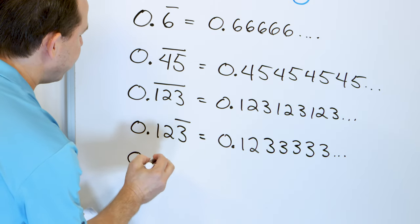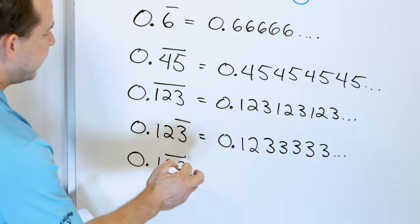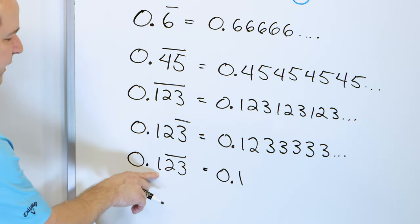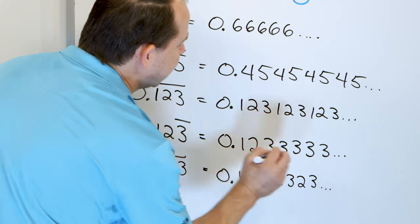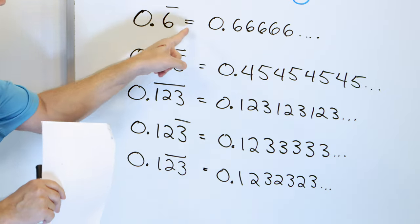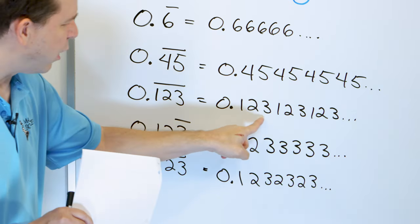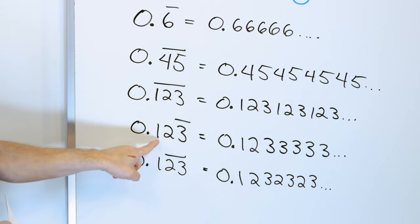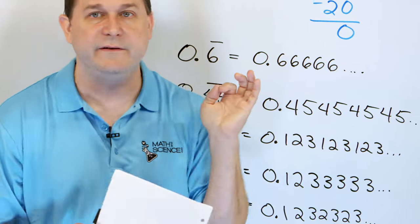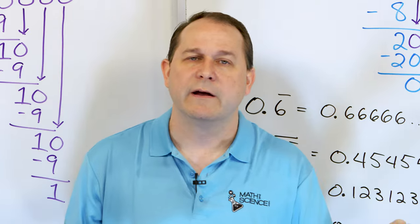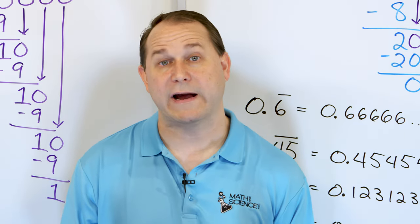If you had 0.123 but the bar was only over the three, then you would have 0.12333333... — the one and two do not repeat, but the three does. If the bar is over the two and the three but not the one, then you'd have 0.1 followed by 23 repeating: 0.1232323... So wherever you see the bar, that's what repeats. If it's three digits with a bar, all three repeat. But sometimes the bar is only over some digits — those without a bar do not repeat, those with a bar do. Continue cycling through the division process until you see what pattern is forming, and that tells you how to write the answer.